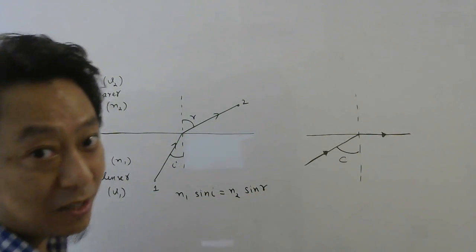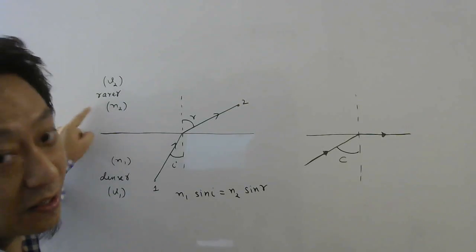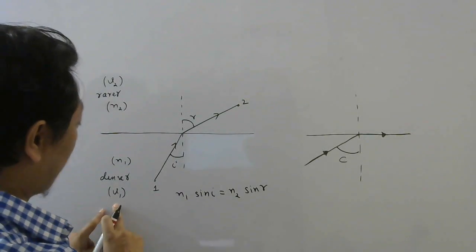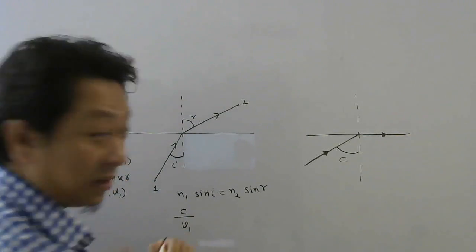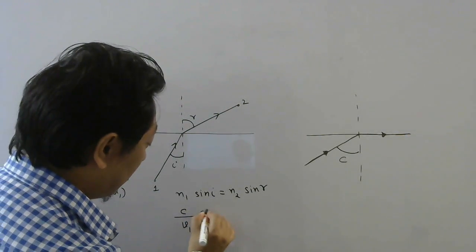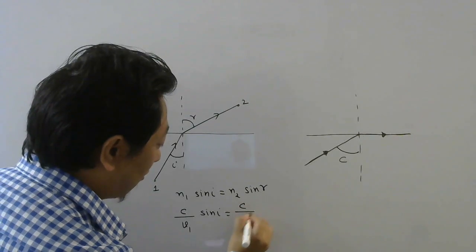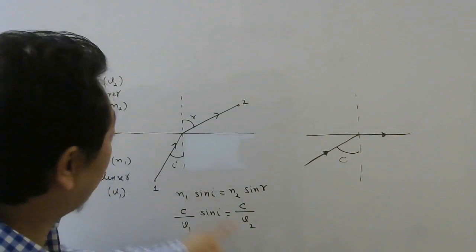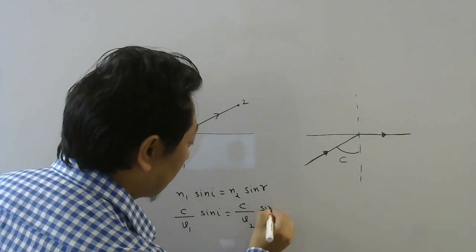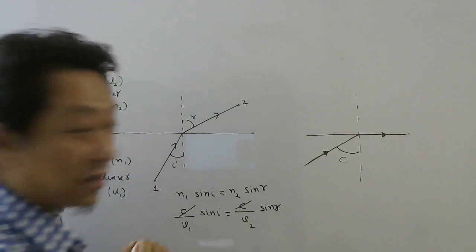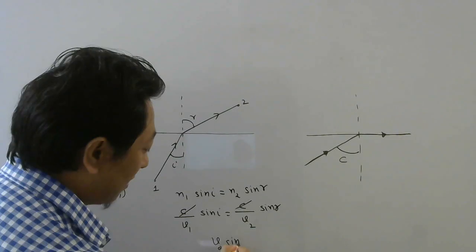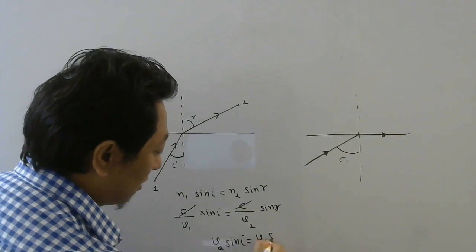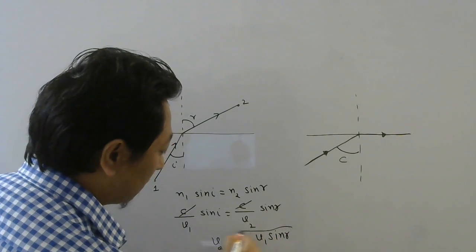The incident ray is in which medium having refractive index n1. So we write n1 sin i equals n2 sin r. Let us write this Snell's law in terms of the speed of light. Here the speed is v1. So n1 can be written as speed of light in vacuum by speed of light in that medium, into sin r. C gets cancelled. If you cross multiply your Snell's law will be v2 sin i equals v1 sin r.